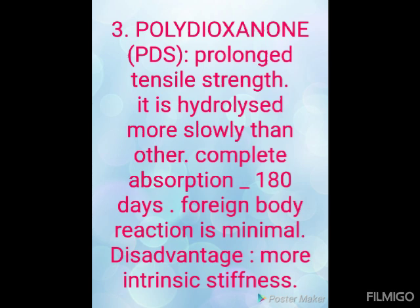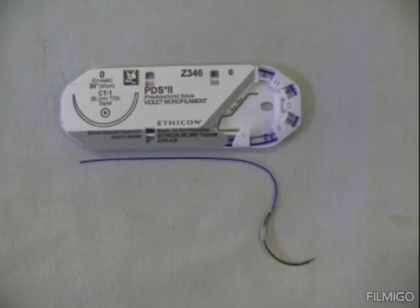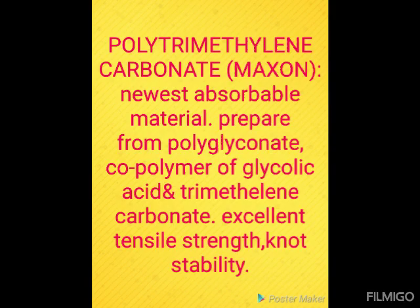Moving on to polydioxanone, known as PDS. It has prolonged tensile strength and is a polymer made from paradioxanone. PDS can prove useful in situations where extended wound tensile strength is required. It is hydrolyzed more slowly than other synthetic absorbables, with complete absorption occurring at 180 days.